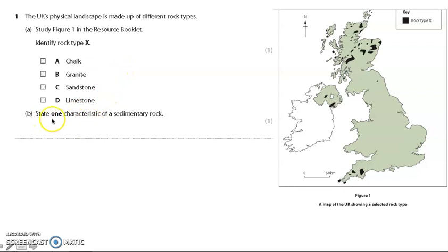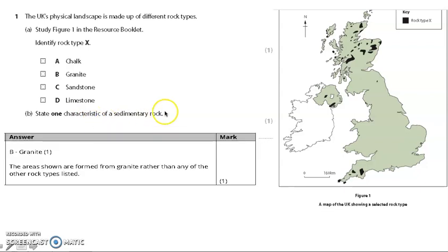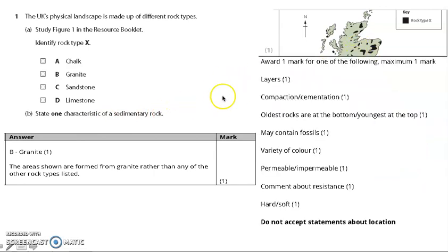Then following on from that. State one characteristic of a sedimentary rock. So again, it's simple, but you just have to give one feature. If you held a sedimentary rock, what would it look like? So have a go at the questions. Pause it. And then the answers. We can see that this would represent granite landforms. And that for the sedimentary rock, the characteristic, you could have any of these answers. And notice you just get one mark for each little point that you make. So really straightforward there.